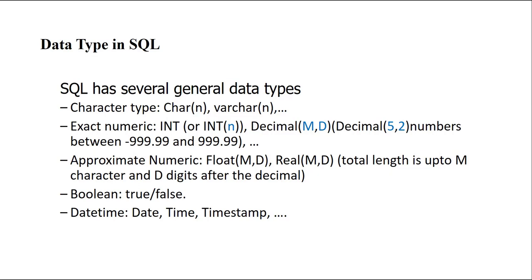Another data type is Boolean — true or false. For example, if the price is more than 10, we can define that as true or false. Boolean is a representation of true and false. Another data type, which is a little more complex, is datetime, which stores date and time information.